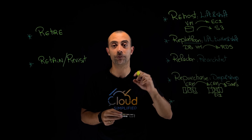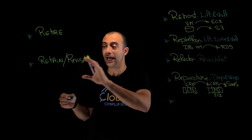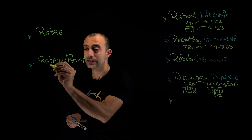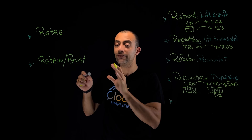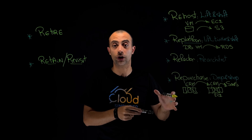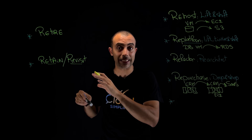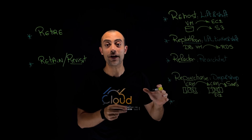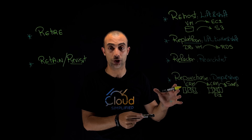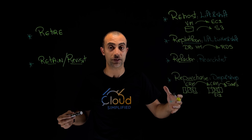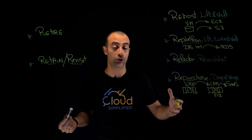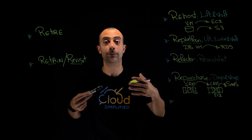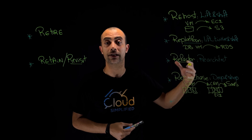Going back to the Retain migration strategy — we mentioned Retain/Revisit. After I've retained my application and kept it on-premise, later on I can revisit it and choose one of two options: either I can refactor the application, perhaps breaking it into microservices and completely changing how it is designed, or I can repurchase — simply taking it as software as a service.